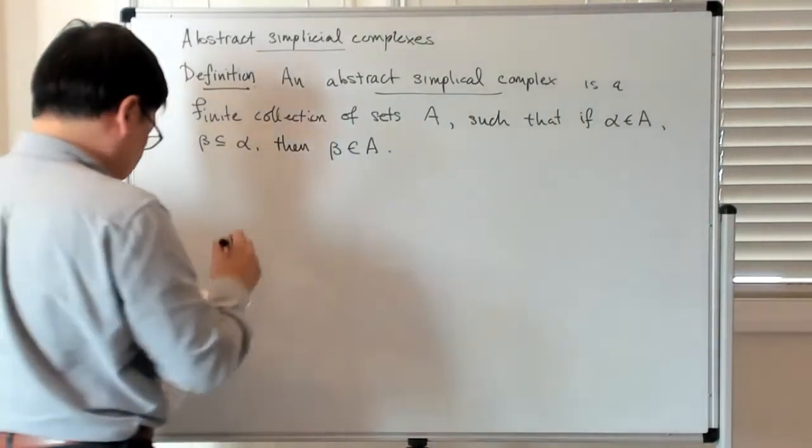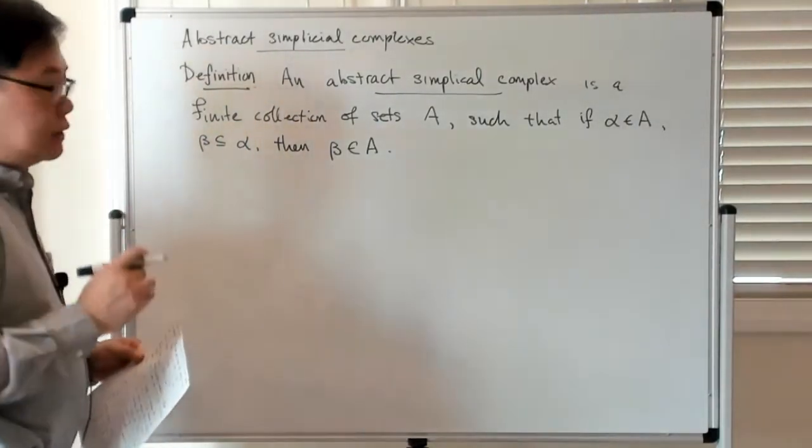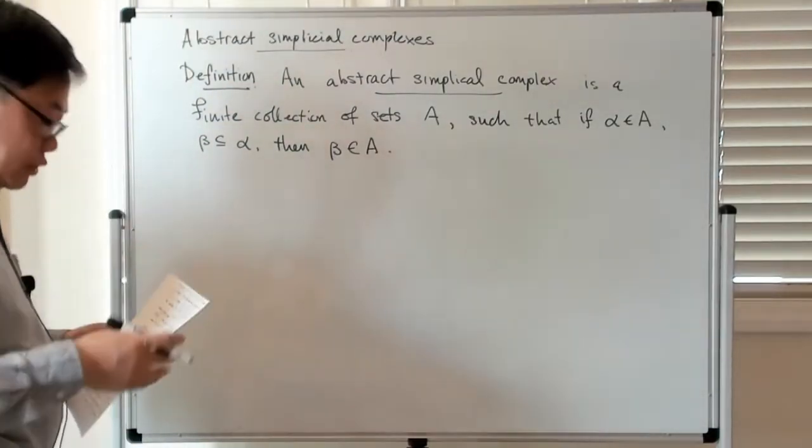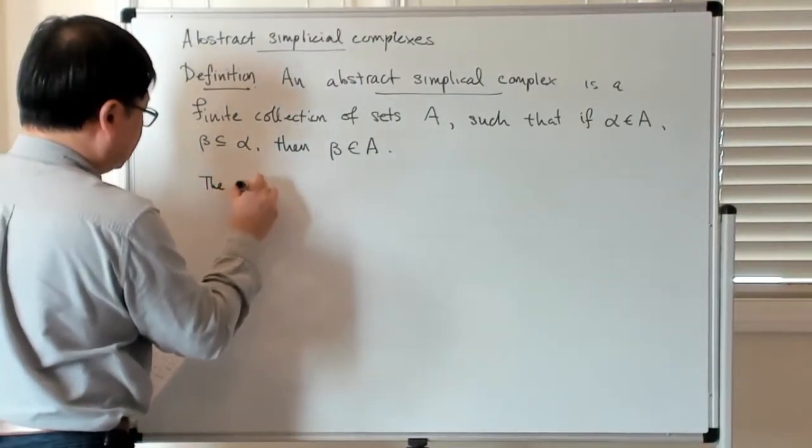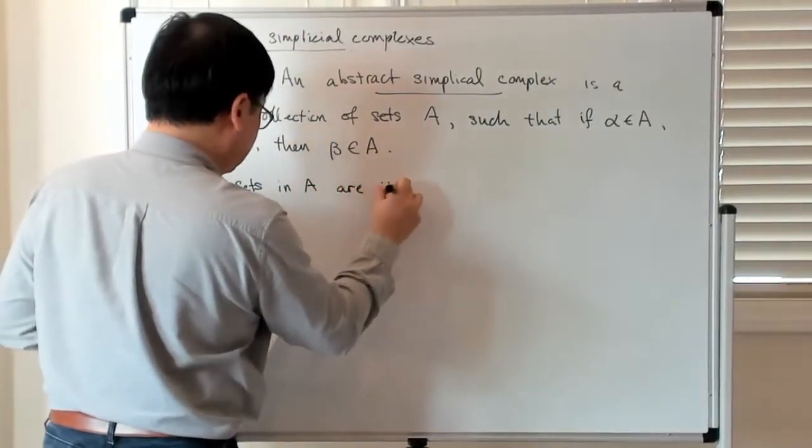The way you think about these collections of sets is that the sets themselves are going to be your abstract simplicies. So the sets in A are its simplicies.